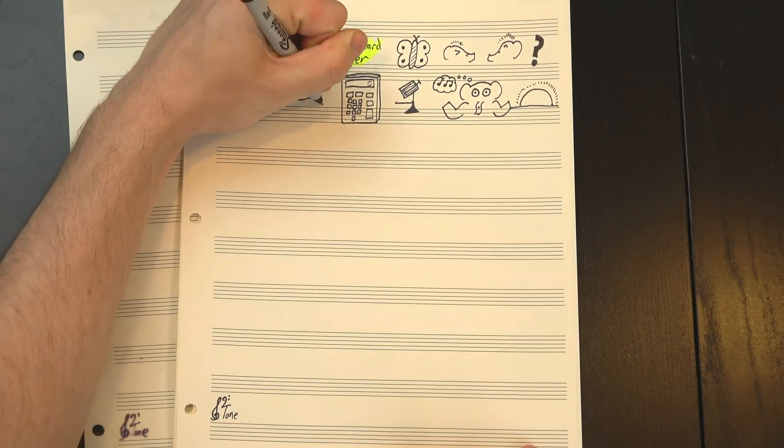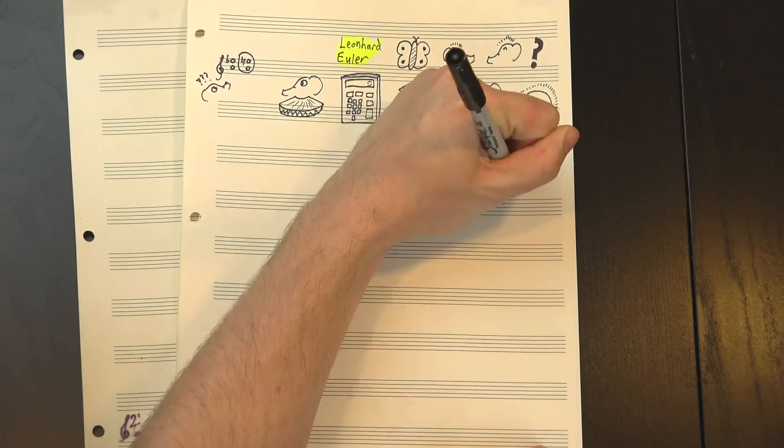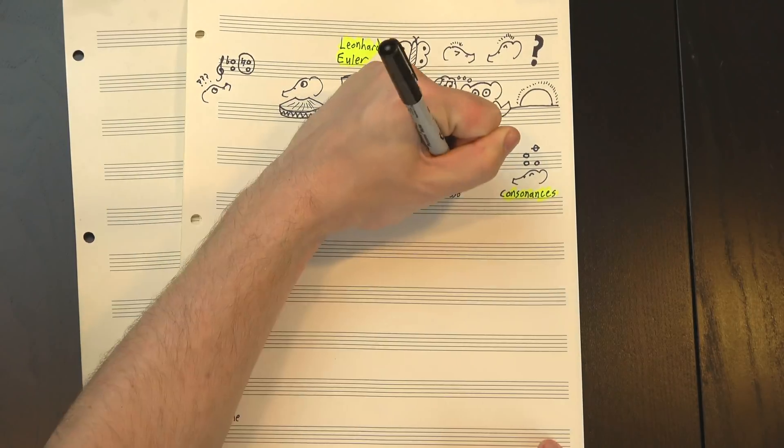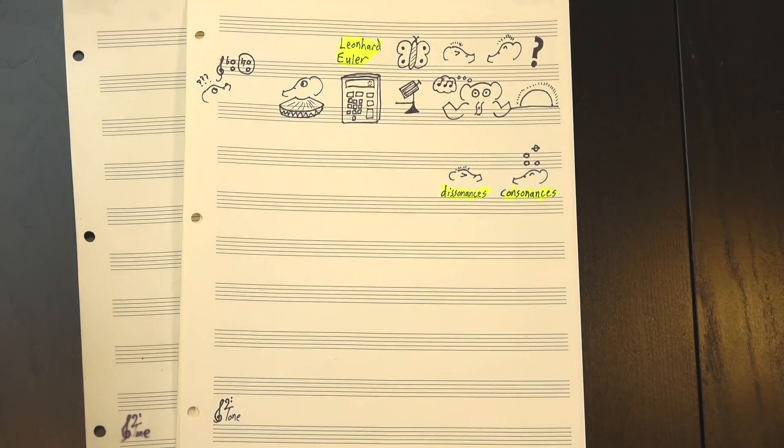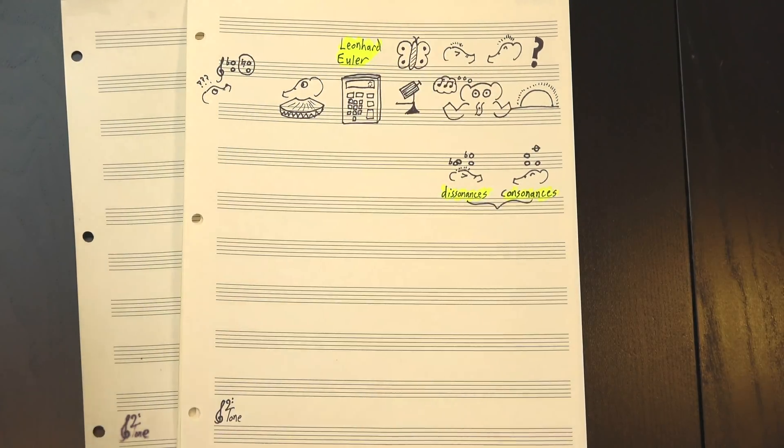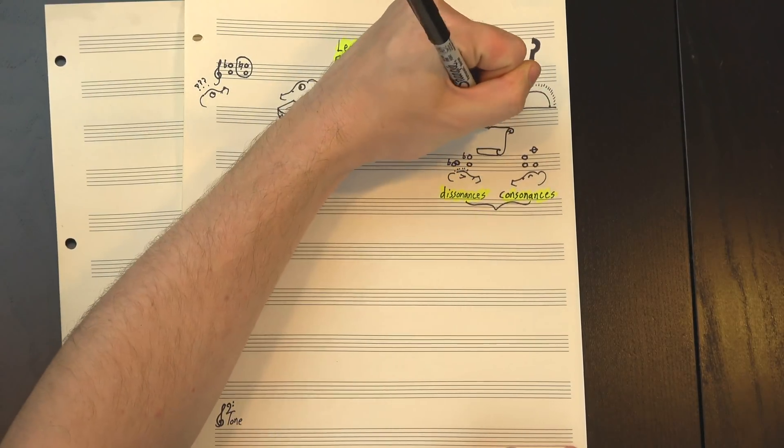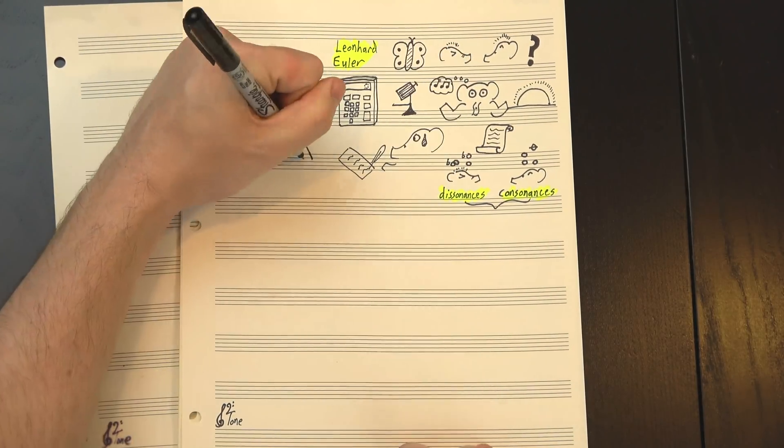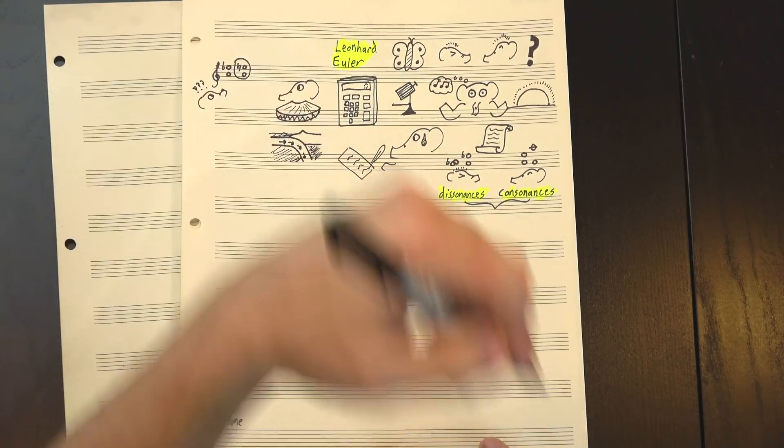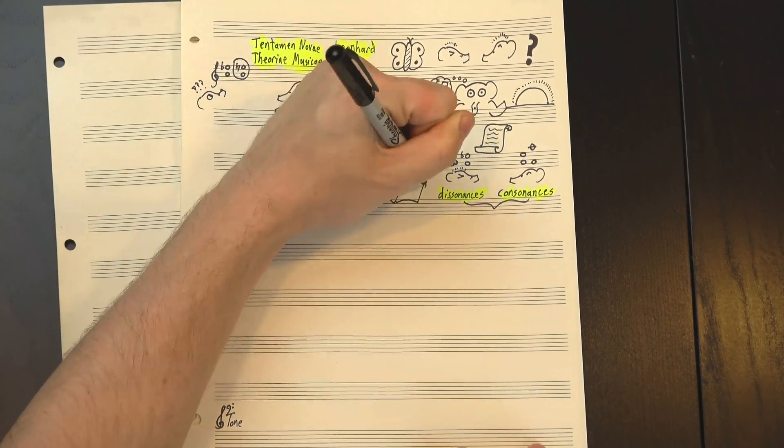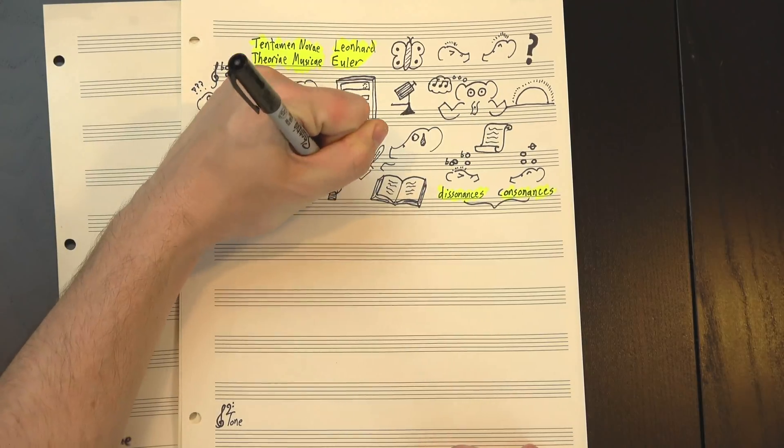Back in the Baroque period, our model was fairly straightforward. You had consonances, which sounded good together, like the octave or the perfect fifth, and you had dissonances, which sounded bad together, like the tritone or the minor second. Every interval was one of these two things, and which group it fell into told you how you were allowed to use it. This is great if you like composing with a million rules, but in reality there's a lot more than two levels of dissonance, and in his book Tentamen Novae Theoriae Musicae, or An Attempt at a New Theory of Music, Euler wanted to find a better system.